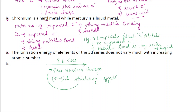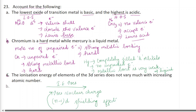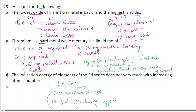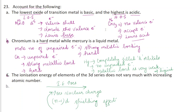So question number 22 and 23 are answered. If you have 3 'account for the following' sub-parts, each will be 1 mark. I hope you understood both questions well. If you liked the video, please like, comment, share and subscribe to the channel. Thank you.